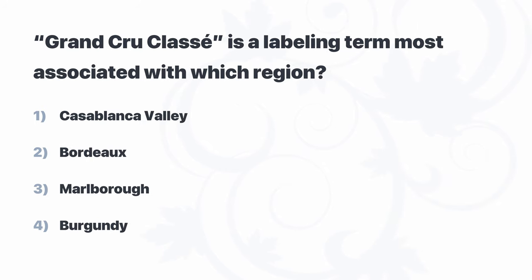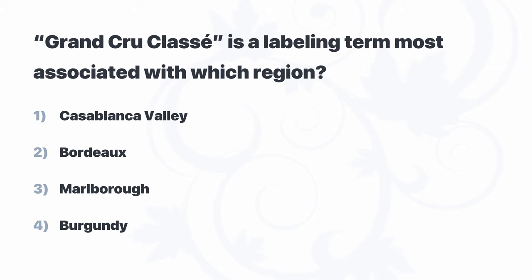Grand Cru Classé is a labeling term most associated with which region? Casablanca Valley, Bordeaux, Marlborough, or Burgundy? Once again, we can set aside two answers right away. Casablanca Valley and Marlborough are both not in France, so they're not likely to be associated with the French Grand Cru Classé term.